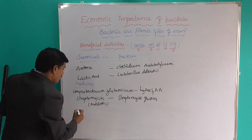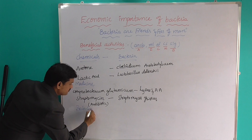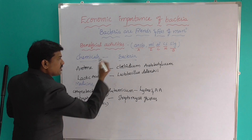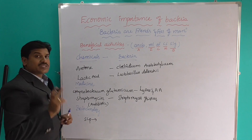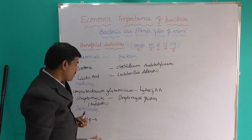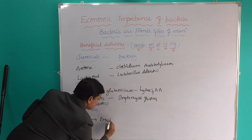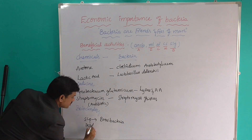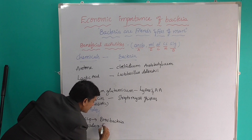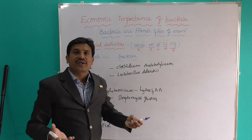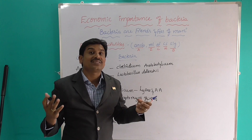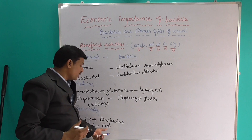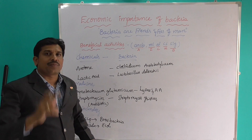For biotechnology purposes also bacteria are very very useful. Especially for single cell protein producing purposes, one bacteria is very useful — the bacteria name is Methylophilus. Next, for insulin-producing purposes also, bacteria are very useful. Especially E. coli bacteria — if insulin is not present, we get different diseases like diabetes and high sugar. E. coli bacteria present in our human intestine produce insulin properly.